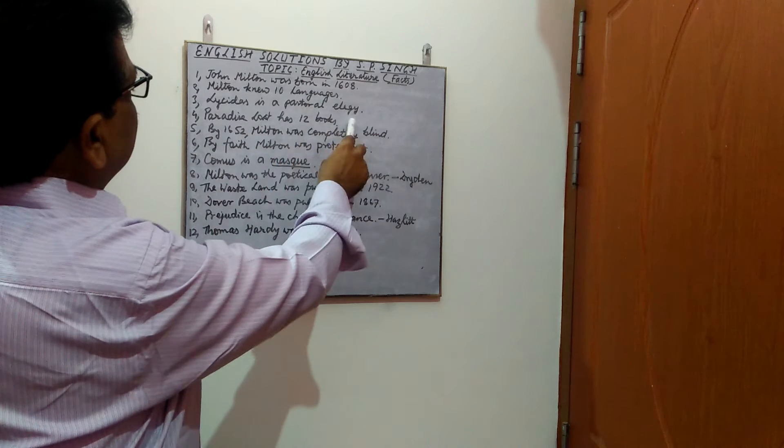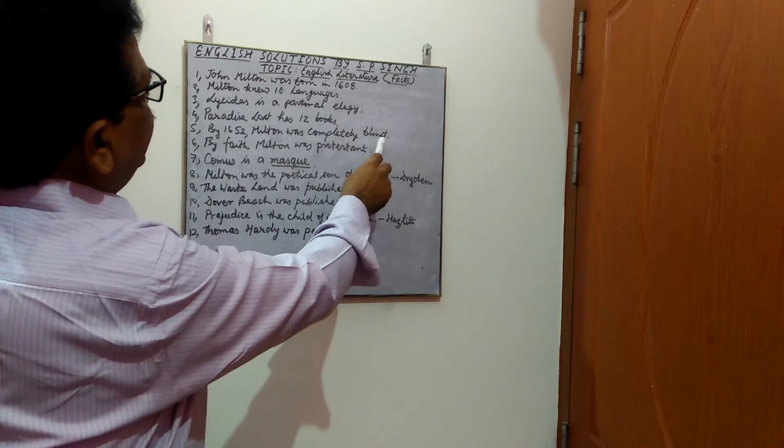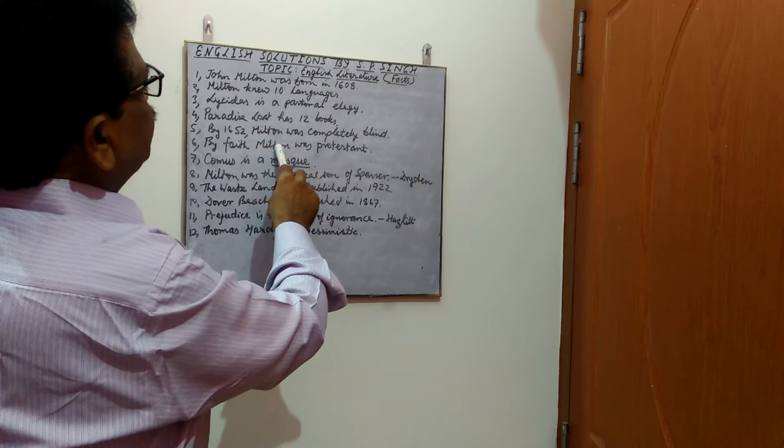Paradise Lost has 12 books. By 1652, John Milton was completely blind. By faith, Milton was Protestant.